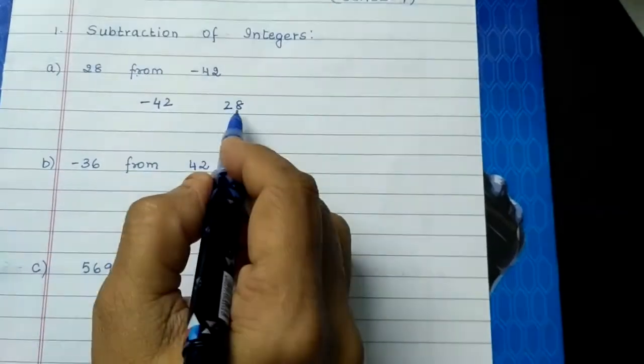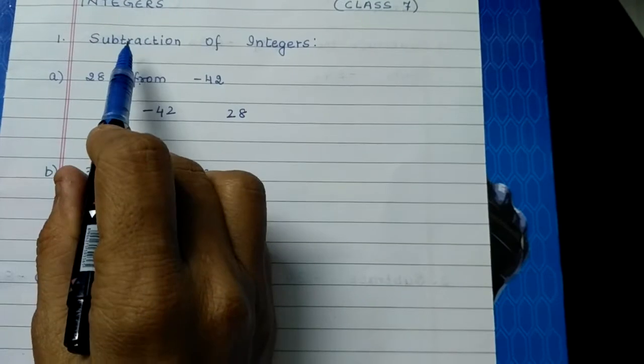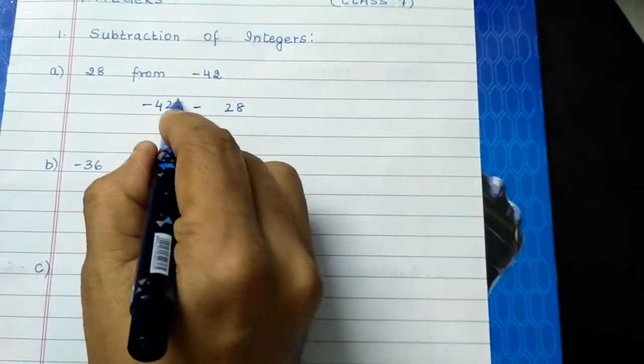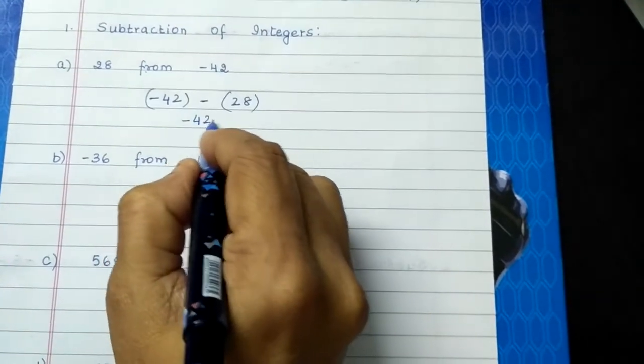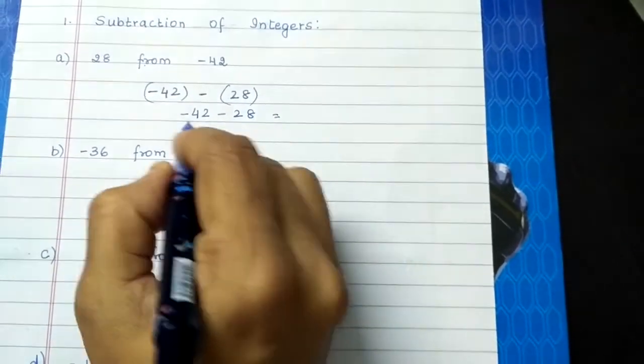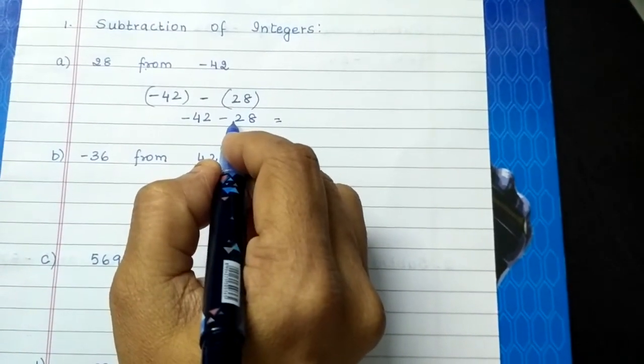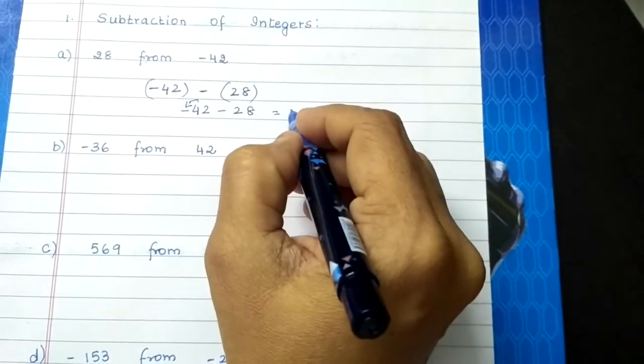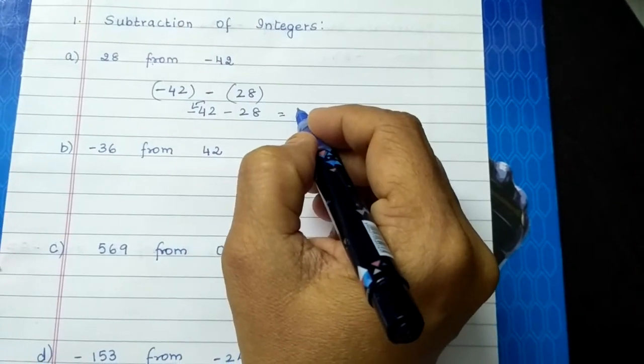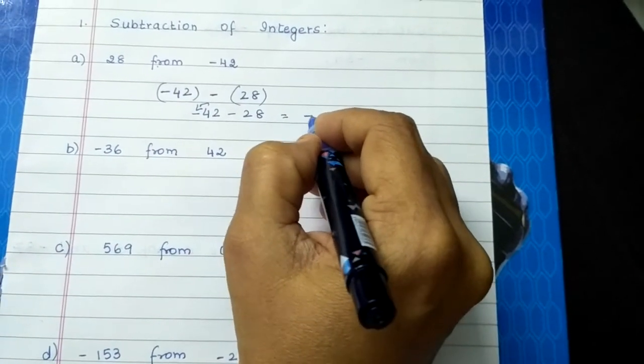So after writing the two numbers, you should put the sign of subtraction in between. So minus 42 minus 28. When there are 2 minuses, what do we do? We add and put the sign of greater number. So 42 is greater, it is carrying a minus sign. So the answer is minus 70.